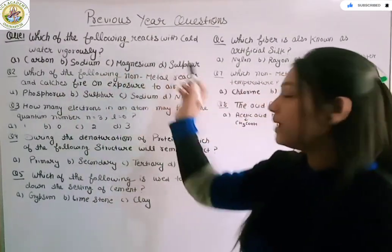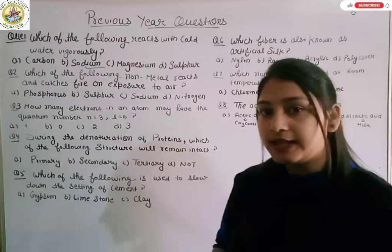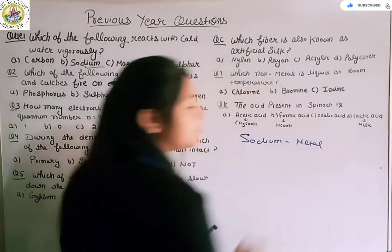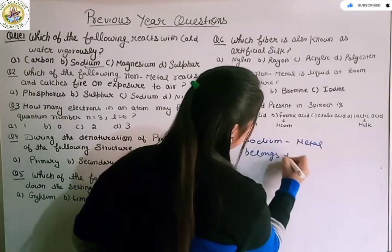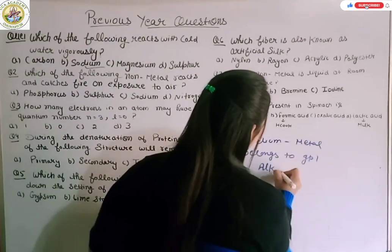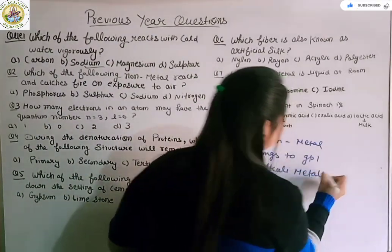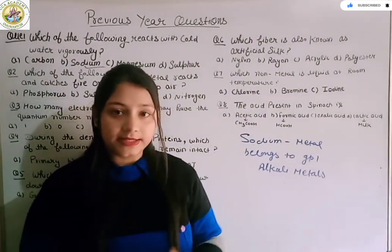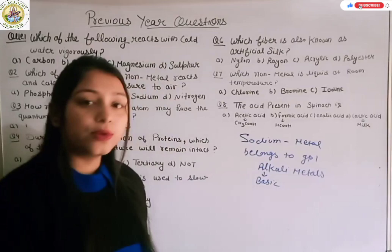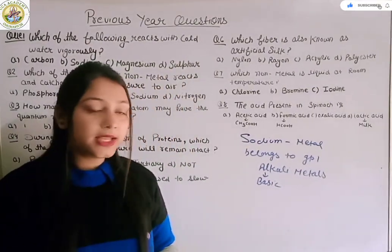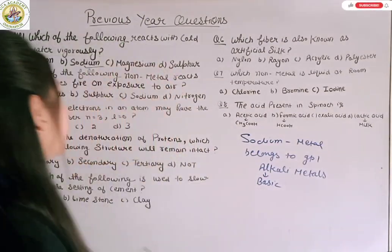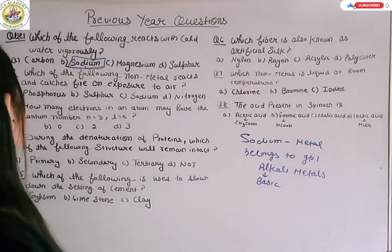Carbon, sodium, magnesium, and sulfur. So the right option is sodium. Sodium is a metal and it belongs to group one. The name of group one is alkali metals. Alkali means basic, alkali means base. So these metals will be of basic nature and if you talk about oxides, the metal oxides will be of basic nature. Clear? So the right option is sodium.